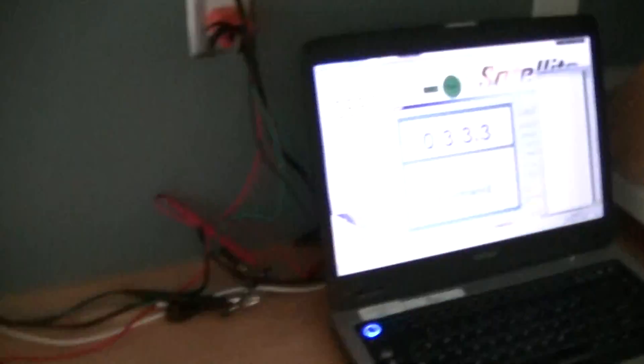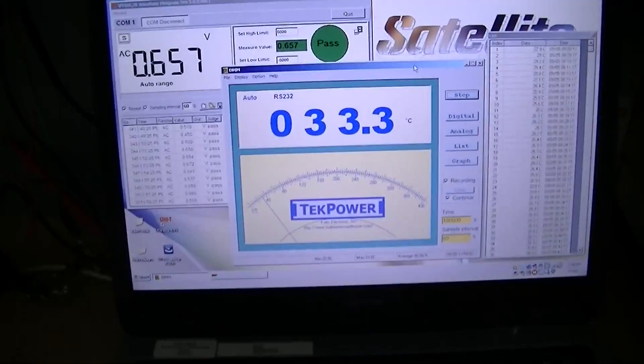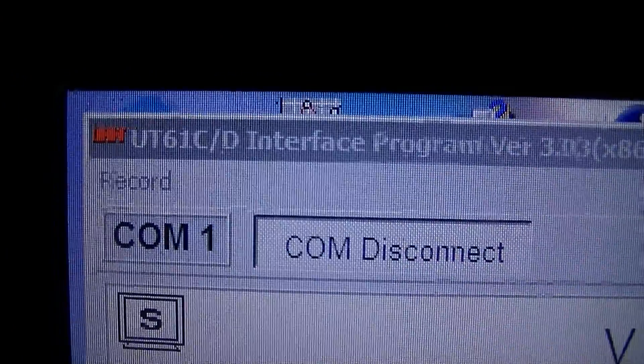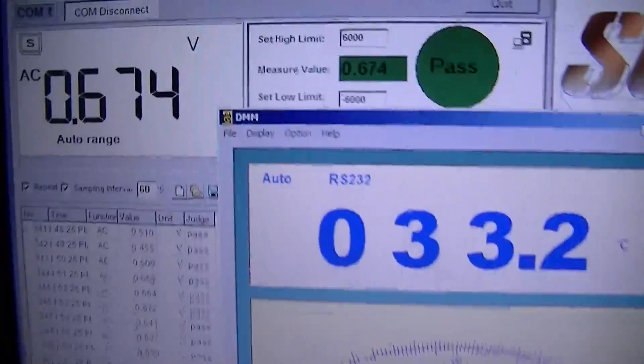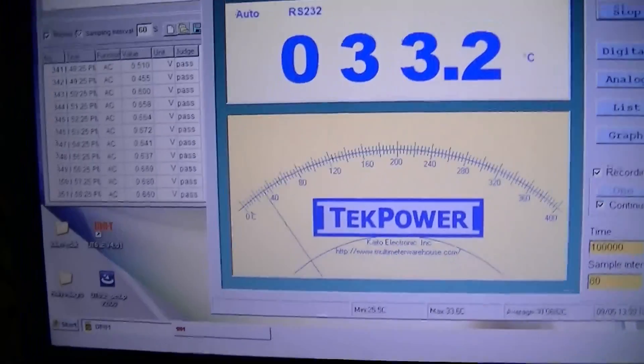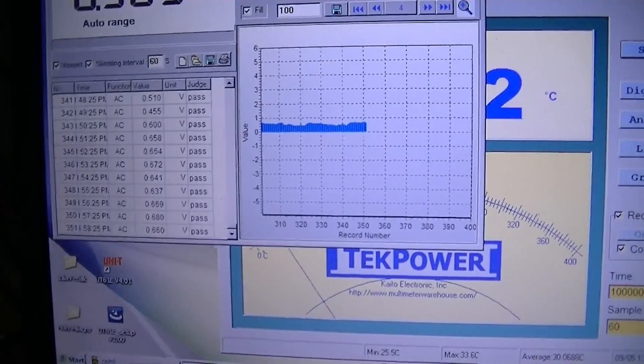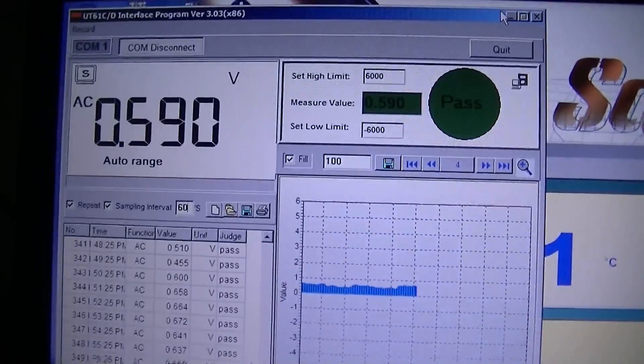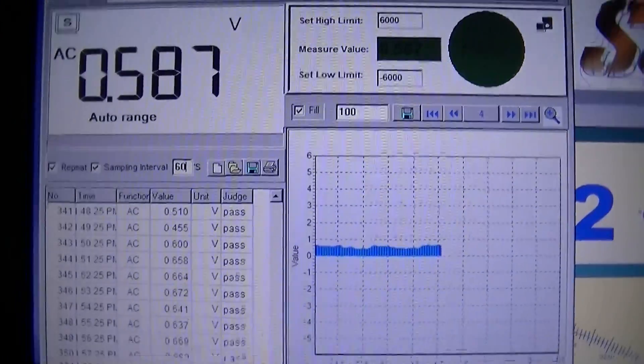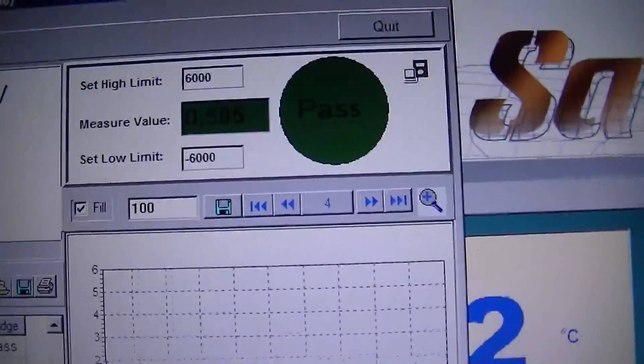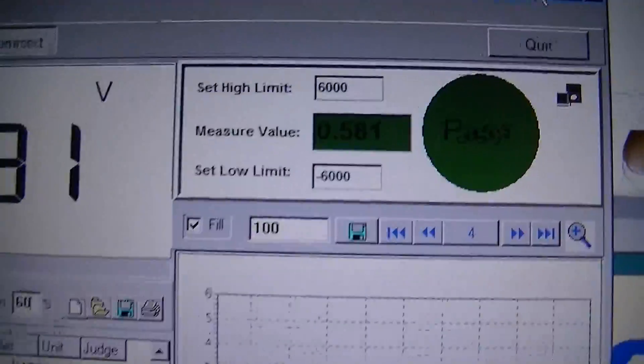I want to show you the logging screen for the UT61D. This is the program. Let me click on it and bring it to the front. You can see that it has quite a simple display. It gives you a graph and you can set this little box to give you a pass or fail setting.